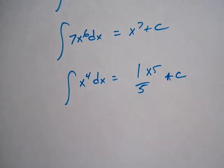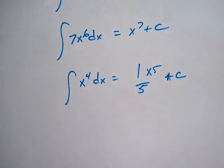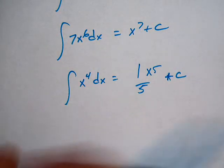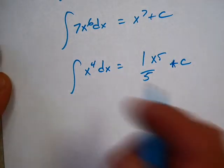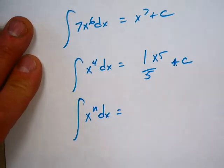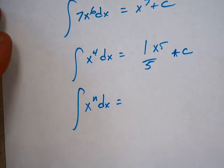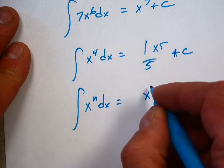Because if you think about it, what did you do to find a derivative? You took the exponent times the coefficient and then you lowered your exponent. So now what I'm going to do is I'm going to raise my exponent and I'm going to divide by that new exponent. If we would think about taking the derivative of this, it'd be 5 times 1/5, which is 1, times x to the 4th.